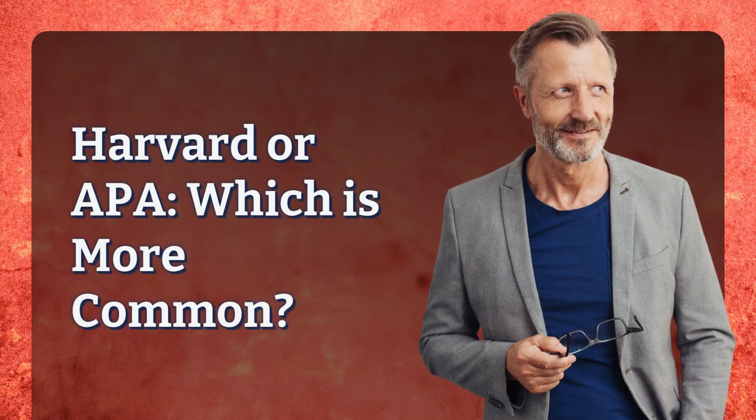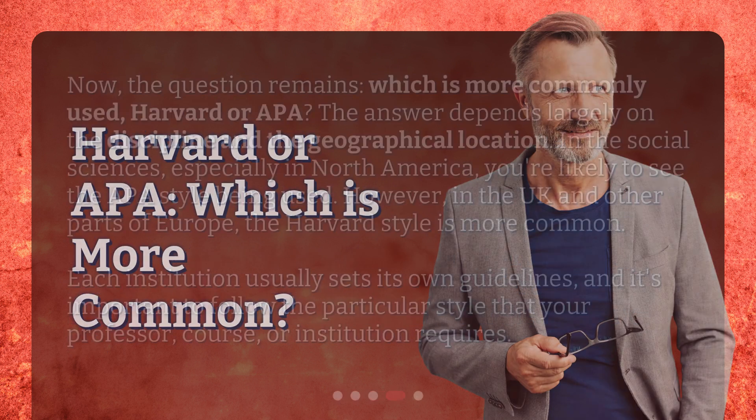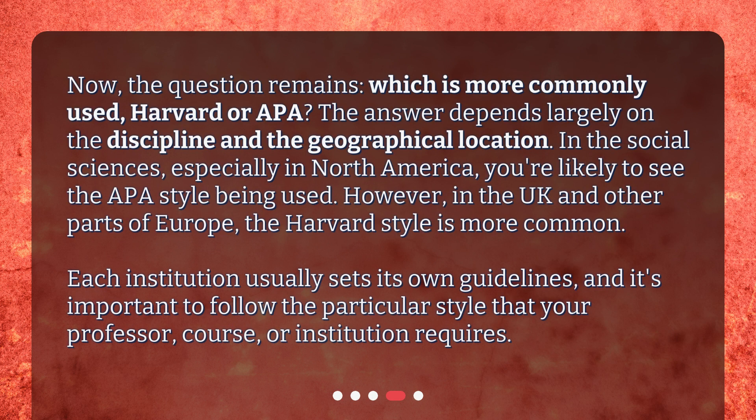Harvard or APA — which is more common? The answer depends largely on the discipline and the geographical location. In the social sciences, especially in North America, you're likely to see the APA style being used. However, in the UK and other parts of Europe, the Harvard style is more common. Each institution usually sets its own guidelines, and it's important to follow the particular style that your professor, course, or institution requires.